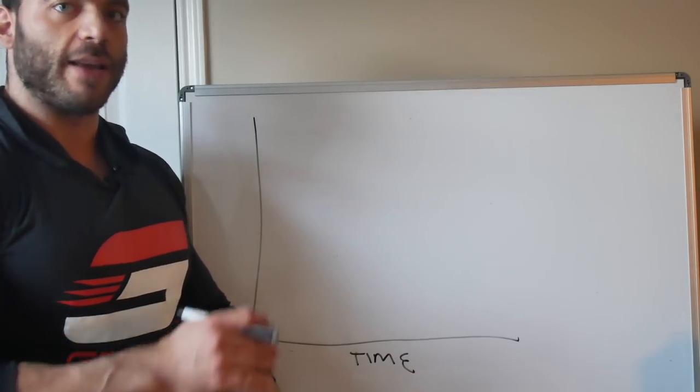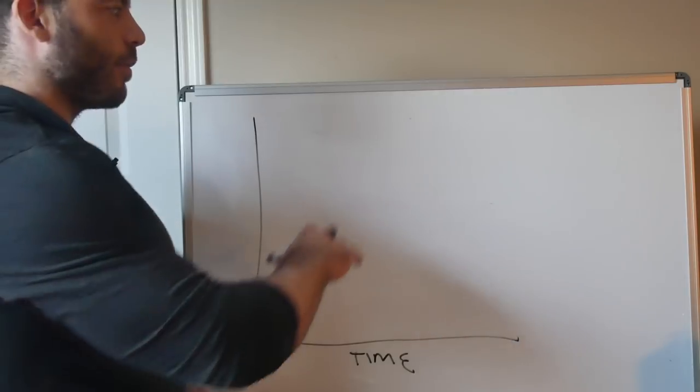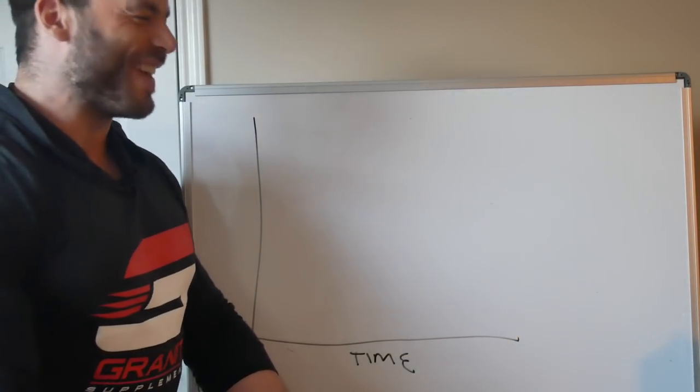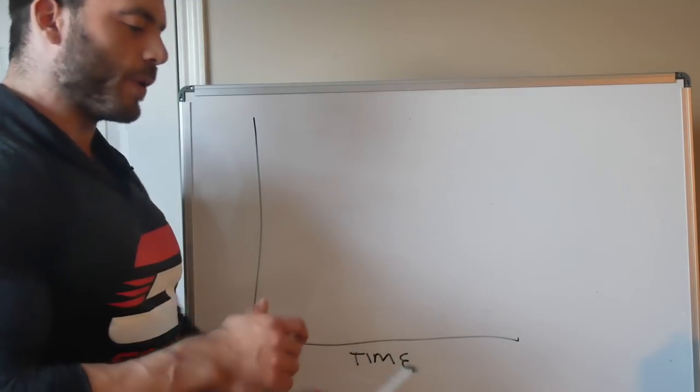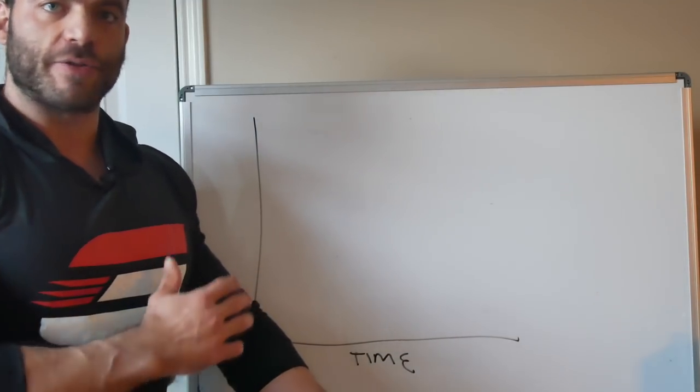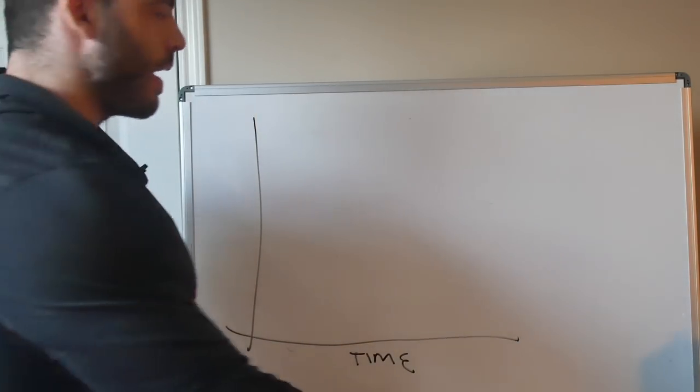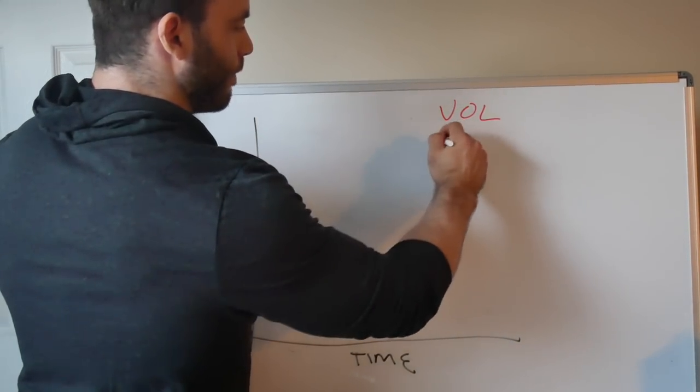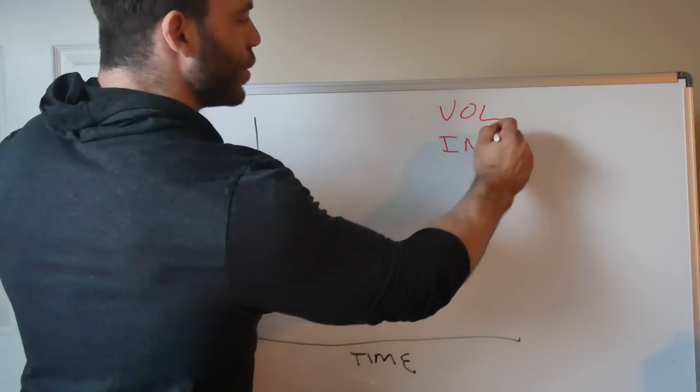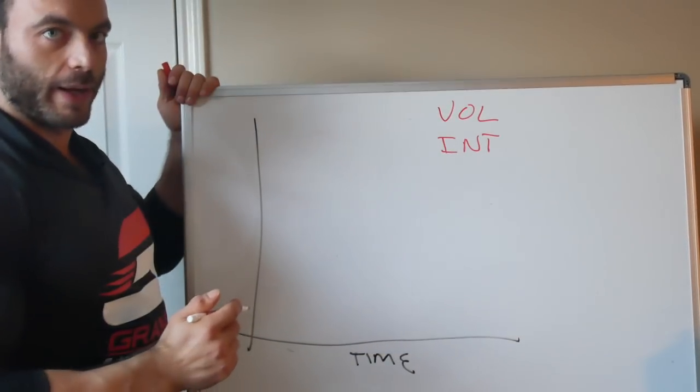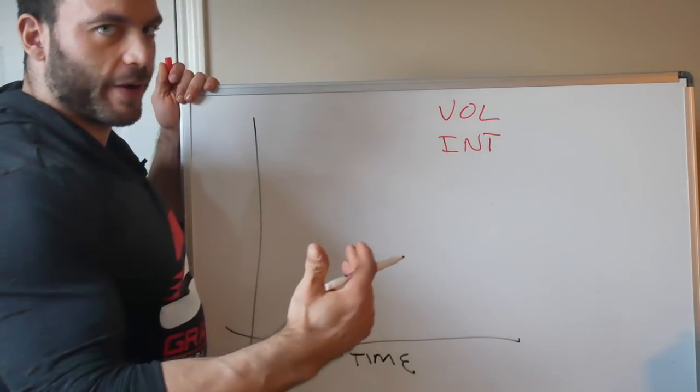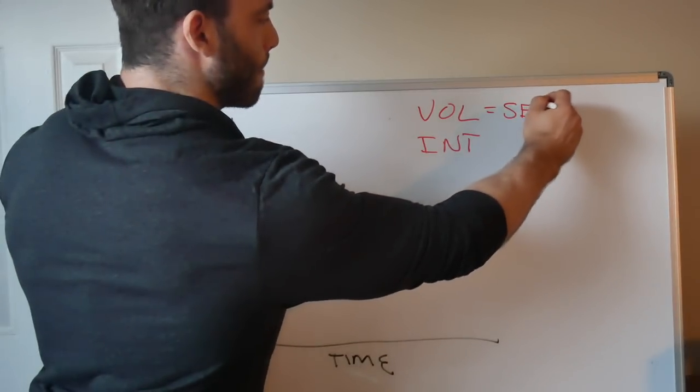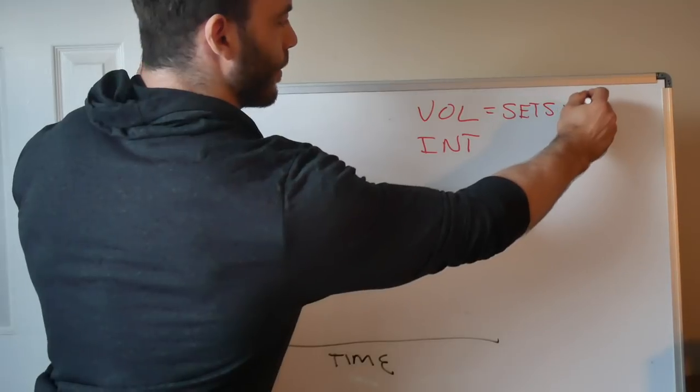The solution is periodization. So your body can't stay in that supercompensation phase forever. Because when you talk about training stimulus, there's actually two variables involved. There's both volume and intensity. Volume is just the number of lifts that you're doing in a given week or a given period of time. We'll talk more about that later. But basically it's the number of sets you're doing times the number of reps you're doing.